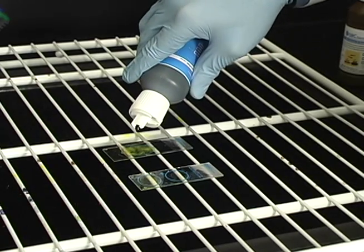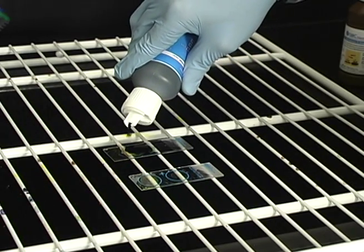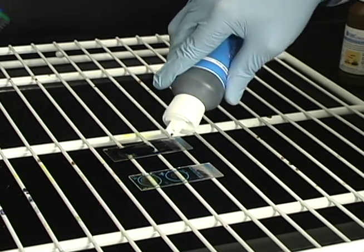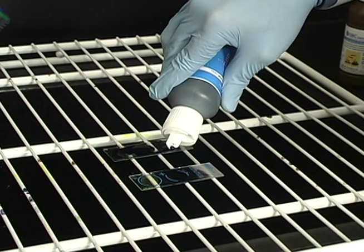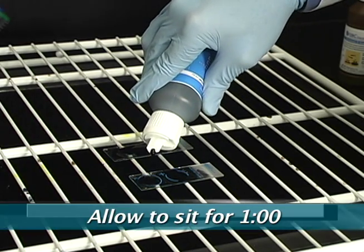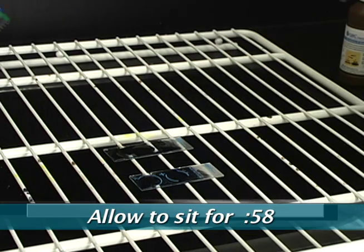To apply the FAST decolorizer quencher stain, dispense 8 to 10 drops or enough stain to completely cover the smeared area. Allow the slide to sit for 1 minute at room temperature.